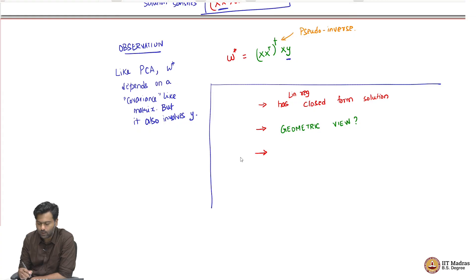The second question is, are there any computational considerations? It is a closed form solution that is excellent, but for instance, in PCA we saw there were some computational constraints. Are there any here? What are the computational considerations that we need to think about?